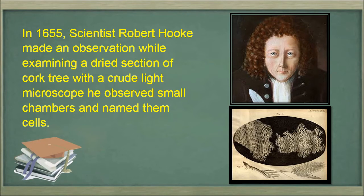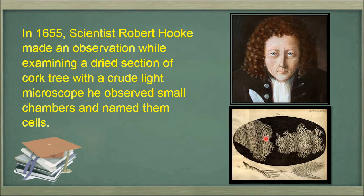In 1655, a scientist named Robert Hooke made an observation while examining a dried section of a cork tree with a crude light microscope. He observed small chambers and named them cells. In this slide you can see the picture of the scientist and the section he observed. These sections appeared like tiny small rooms, so he gave them the name 'cell'.